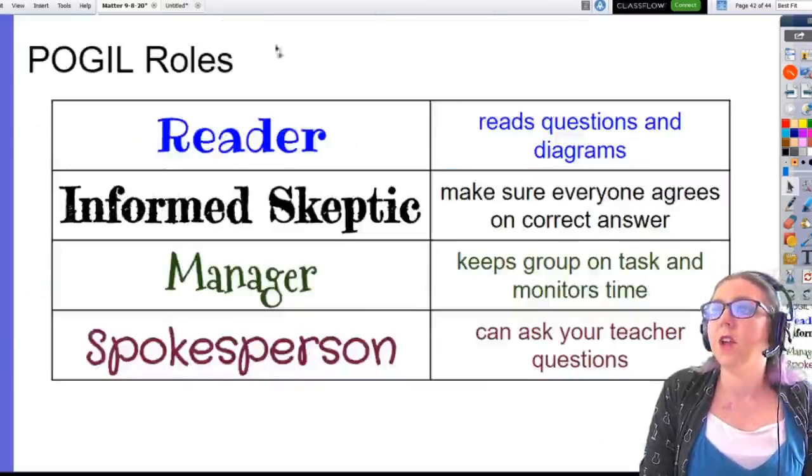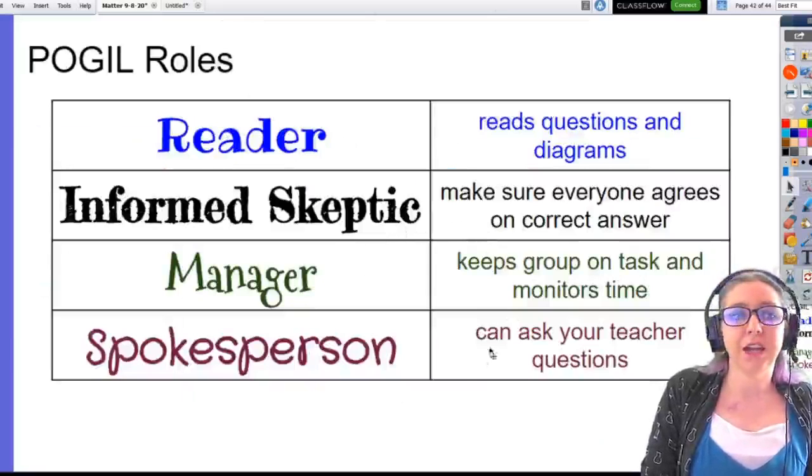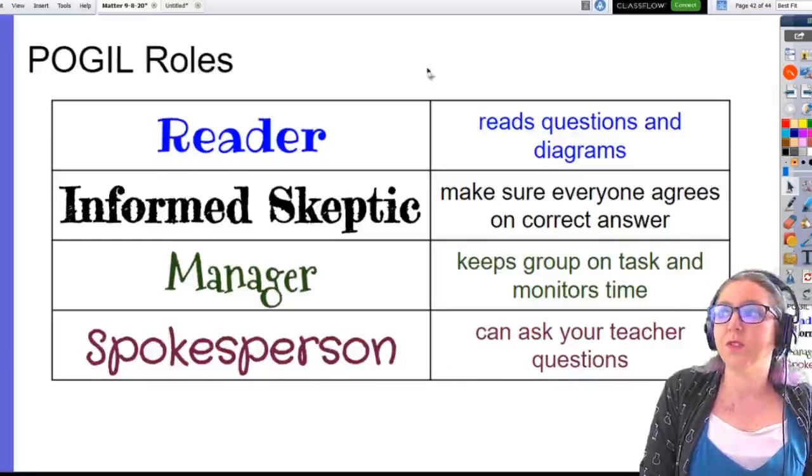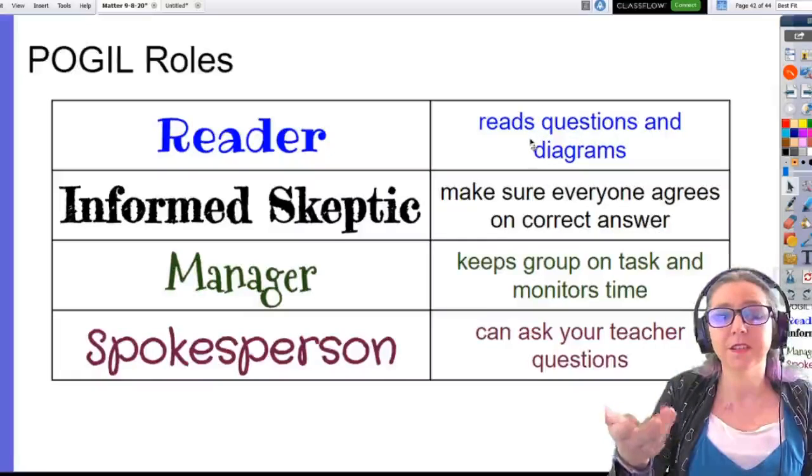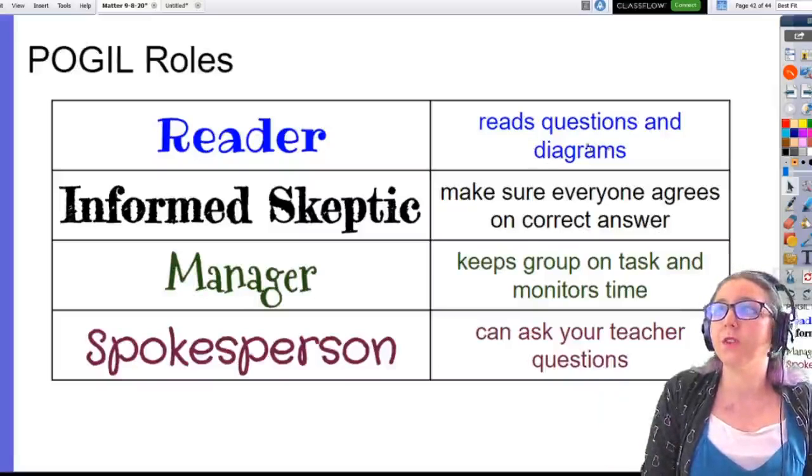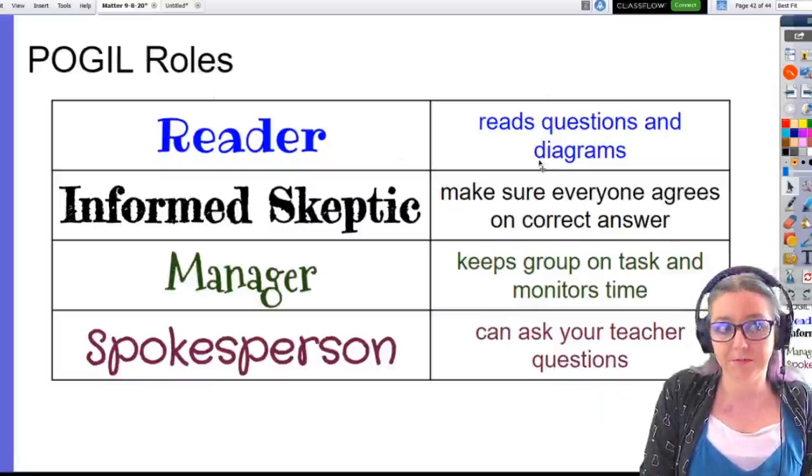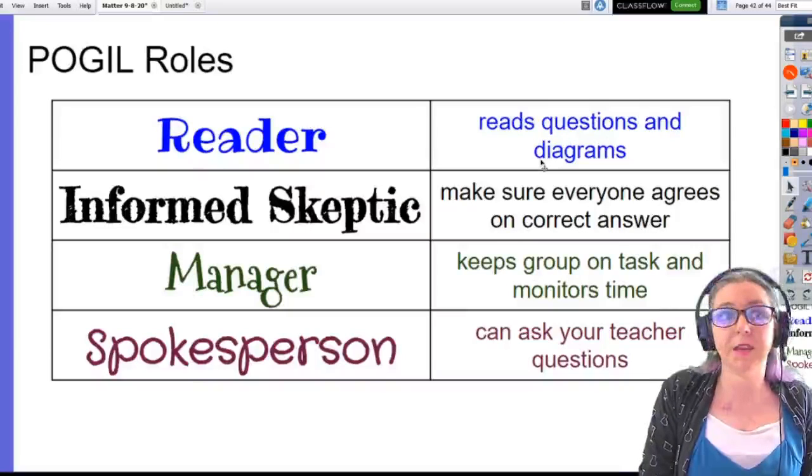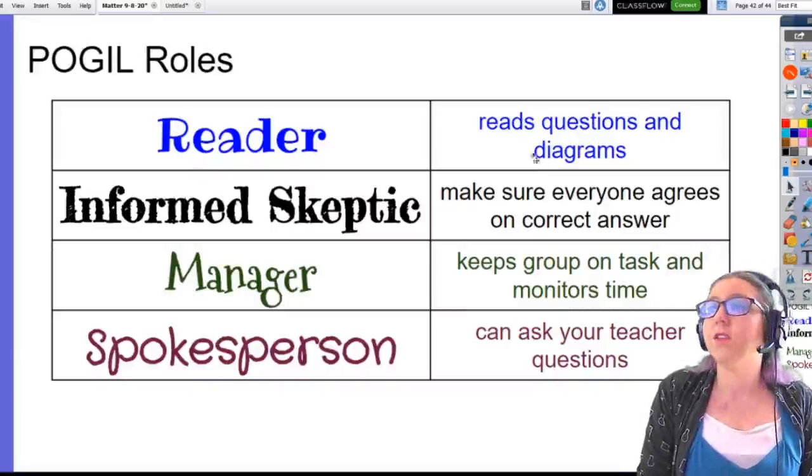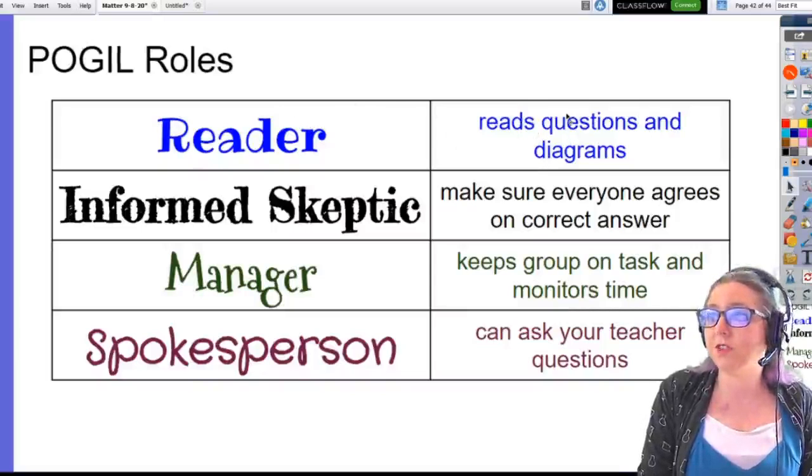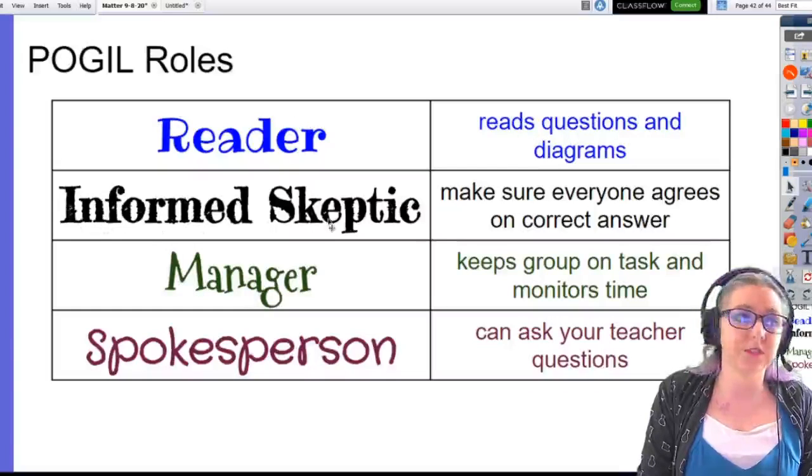Our roles for today. We had reader, informed skeptic, manager, and spokesperson. The reader is the person who reads the questions and the diagrams. It's the person who leads for the group. The reader should be the person who's able to share their screen. Sometimes, there are some technical difficulties and people aren't able to share their screen. So, if the reader is not able to share the screen, then the informed skeptic should. The informed skeptic, you're making sure that everyone is participating. You're making sure that everyone's on the same page, that everyone agrees on the answer.